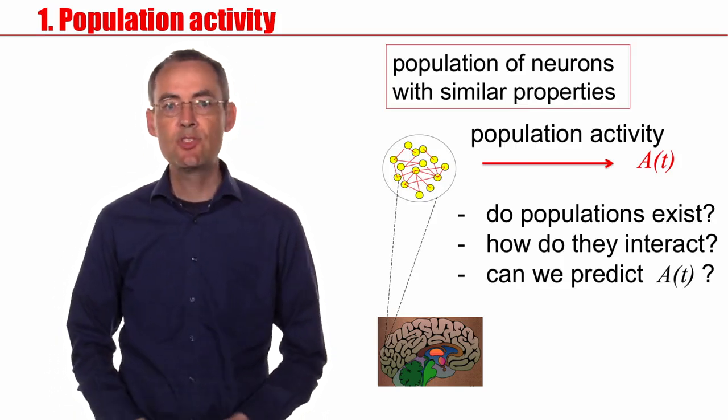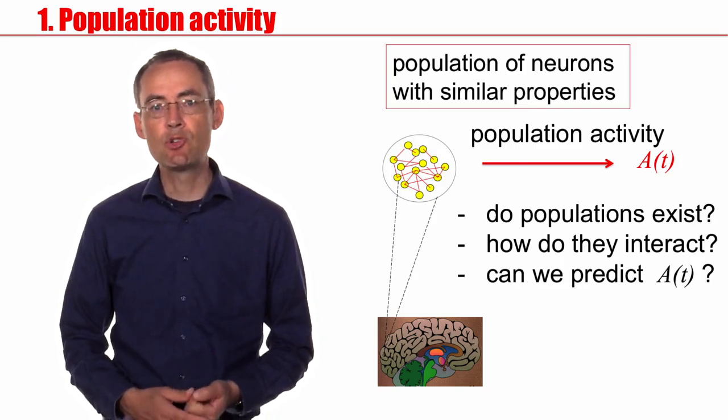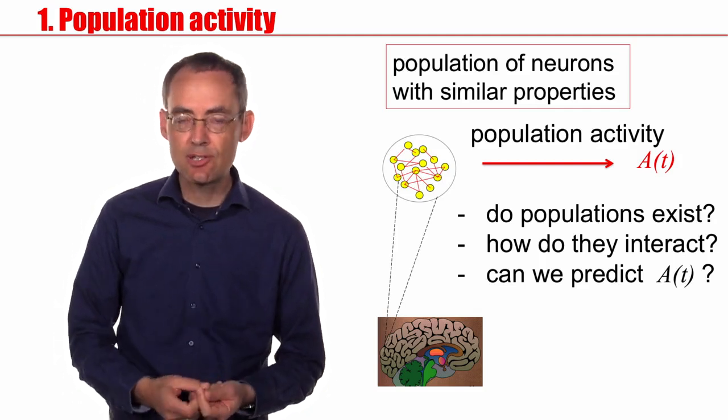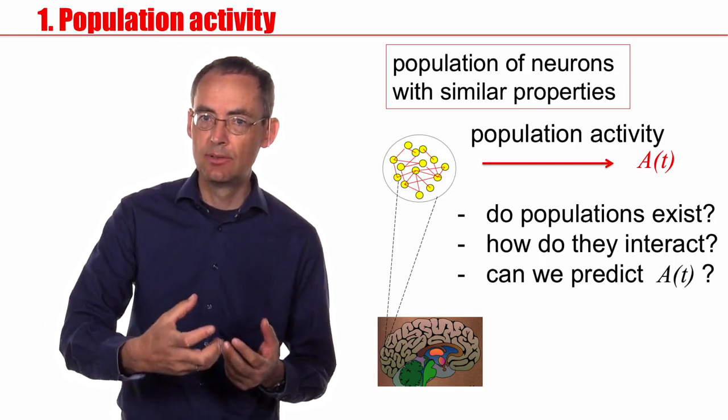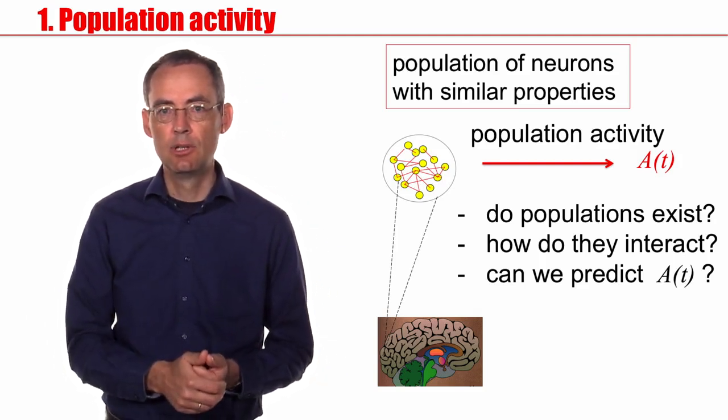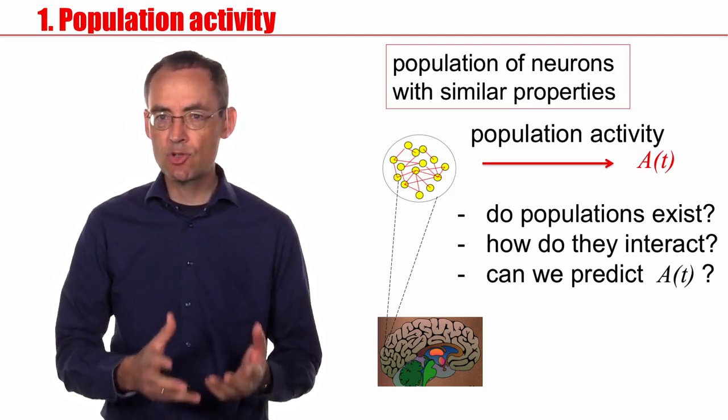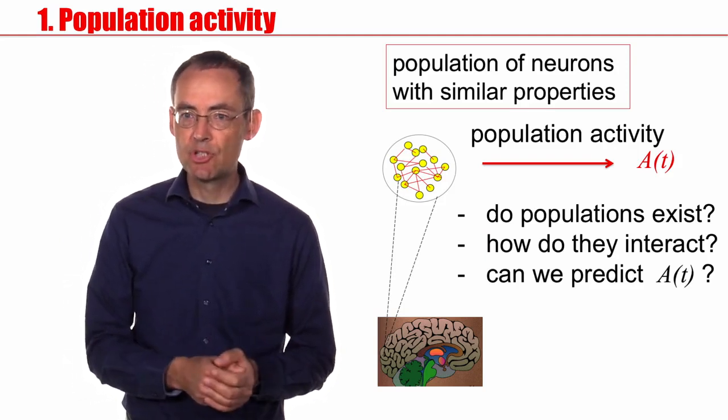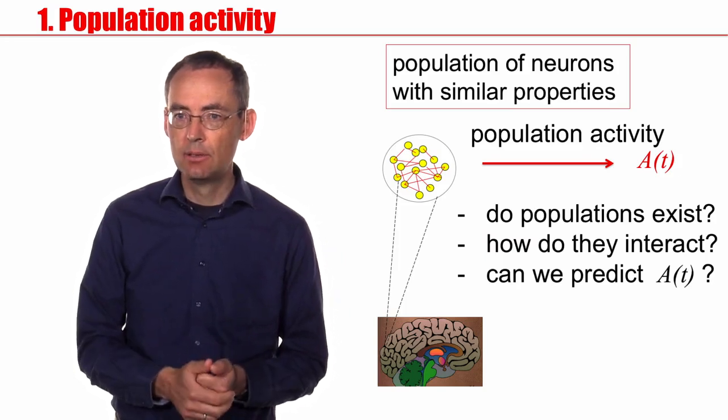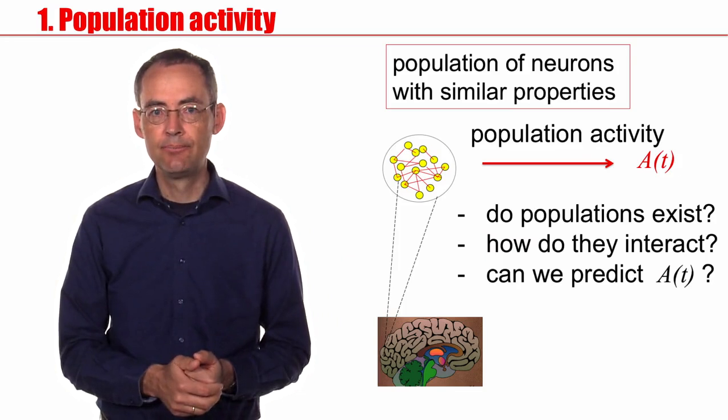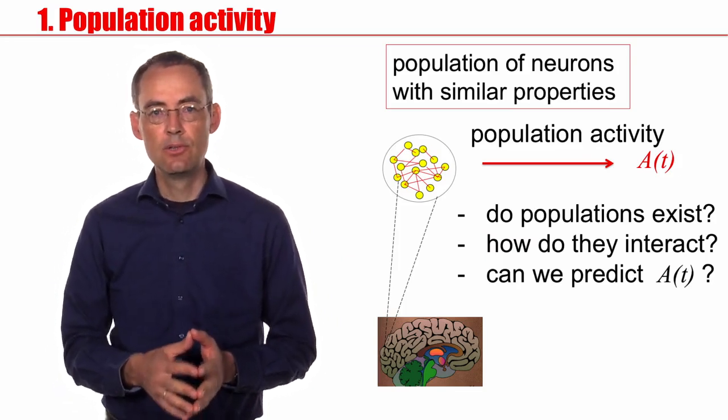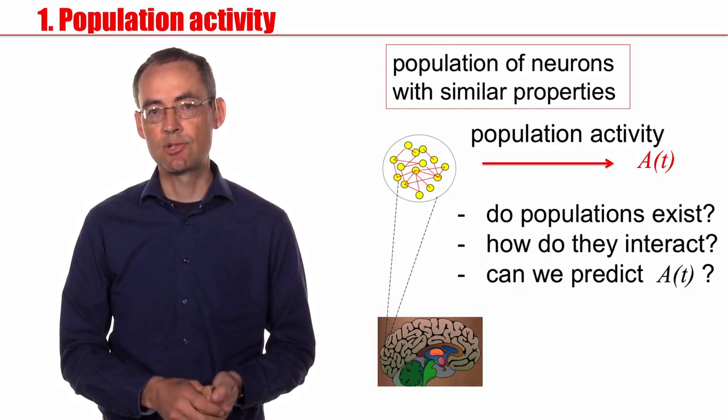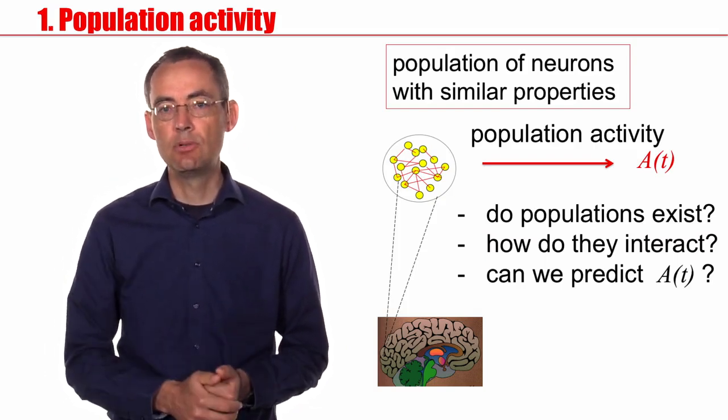To summarize, in this section we have seen that we can define the population activity in a population of neurons with similar properties. If you want to do a spatial averaging, it's nice to have neurons that are somewhat similar. Then it makes sense to do this spatial average. But then the question arises, are there such populations in the brain? Do such populations exist? And if so, can we predict what the activity would be? And how do different populations interact? These are the questions that we will address this week. Stay tuned to find out about the mathematical approaches that will enable us to answer these questions. But before we continue, let's look at the quiz.